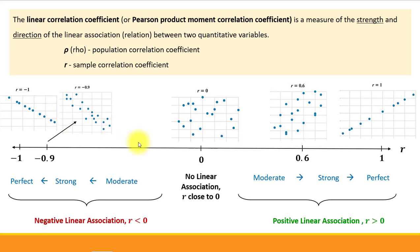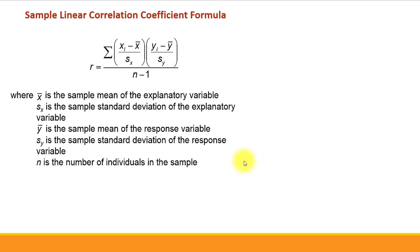It's important to note that each set of bivariate data has its own unique corresponding correlation coefficient. One way to find it is to compute it by hand using the formula. Here is the sample linear correlation coefficient formula — it may seem a little intimidating at first, but as we look closer we'll be able to recognize all its parts.